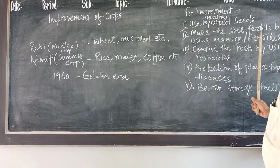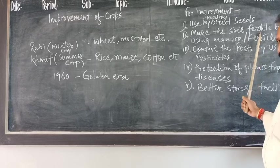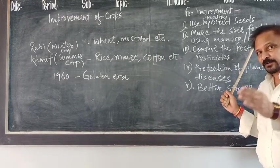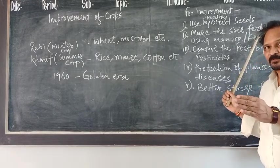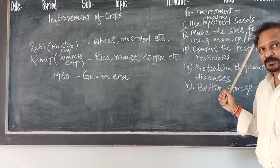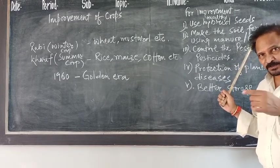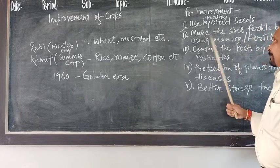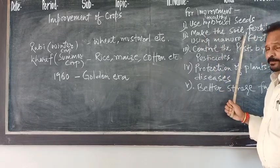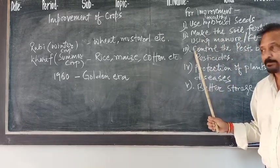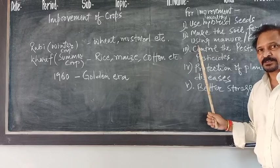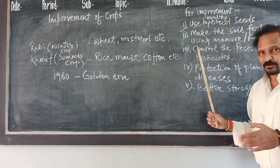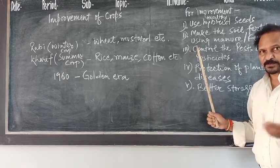The second step is: make the soil fertile. That is, improve the quality of soil for the particular plant which we are going to sow. Make the soil fertile by using manure and fertilizer, and also properly prepare the soil.